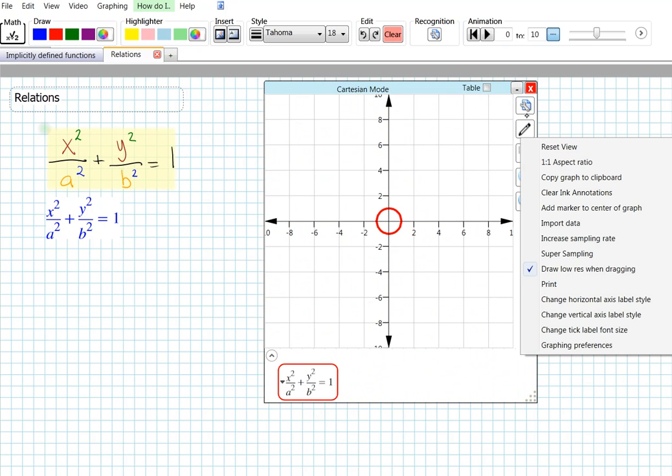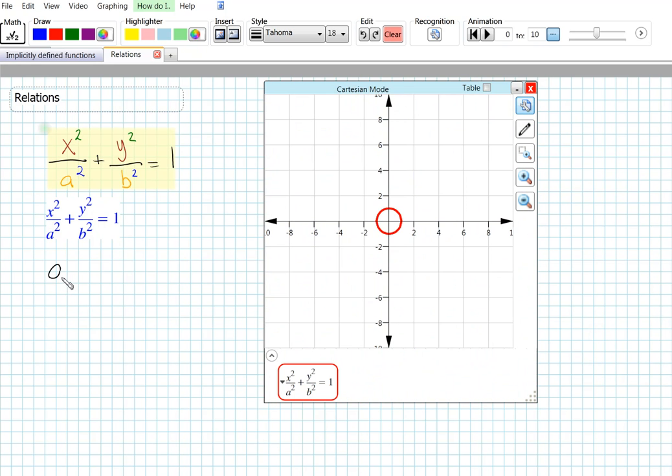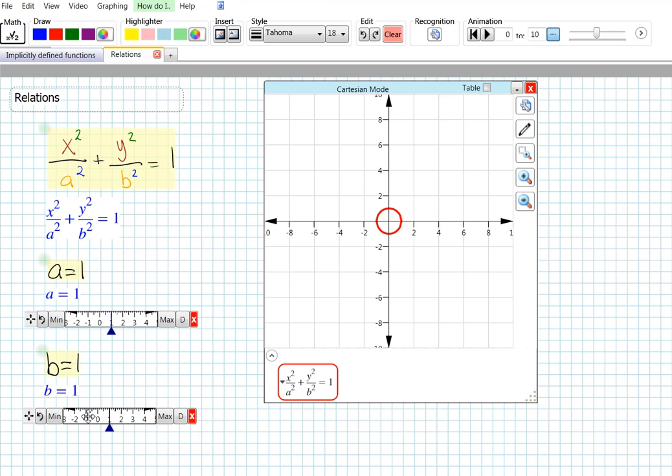In this case, it probably makes most sense to set it to 1 to 1 aspect ratio. And let's create sliders for a and b. Probably want to change them to discrete sliders. And now it's a perfect tool for investigating conic sections.